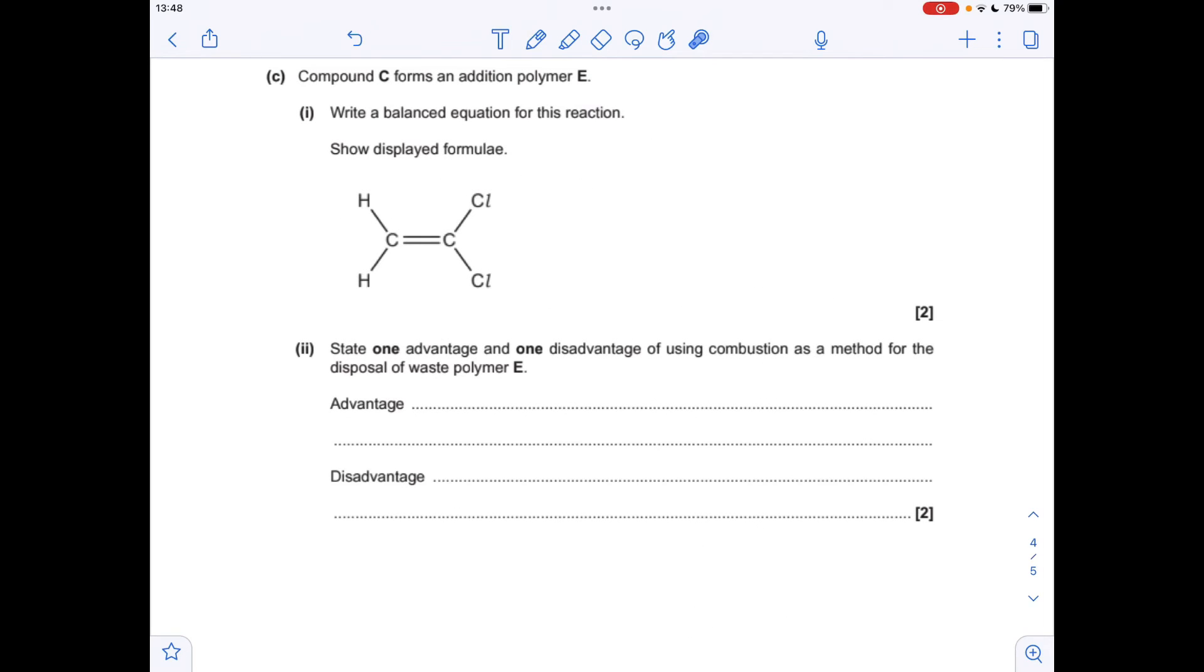And finally part C about the addition polymerization of C to E. So there's compound C again. We're going to need a lot of these. So we represent that with that small n. And we break the double bond and put some end bonds on. Put the brackets around. Make sure these end bonds poke through the brackets. And then just put all the atoms back on.